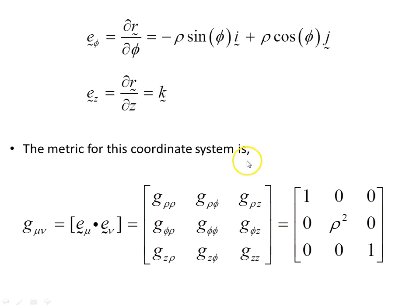Now the metric for this coordinate system will be this matrix here. Now these are the basis vectors, the scalar product of the basis vectors. So for instance, g subscript rho, rho means E subscript rho dotted with E subscript rho. And that result there, and when we perform that operation we get 1. This one here, g subscript phi phi, that's this basis vector here, dotted with itself, and we'll get rho squared.